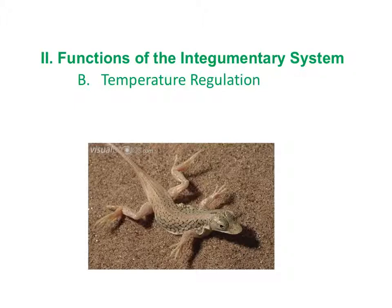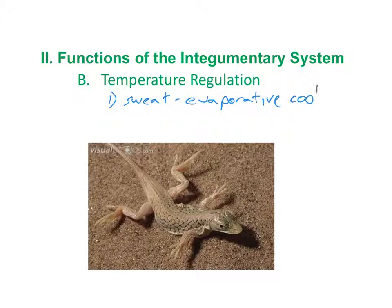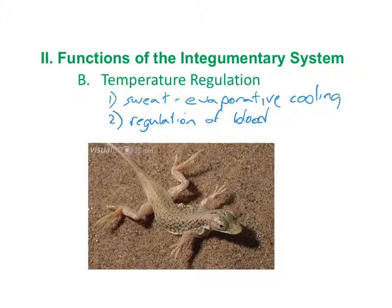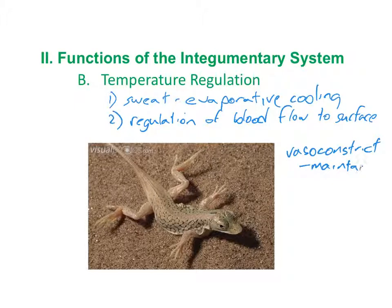The second function of the integumentary system is temperature regulation, as it is the primary interface between the inside of our body and the outside. To regulate temperature, sweating allows us to cool the body through evaporative cooling. A second way is through regulation of blood flow to the skin. Vasoconstriction closes off blood vessels and helps us maintain heat, while vasodilation opens blood vessels bringing blood close to the surface so we can lose heat to the environment.